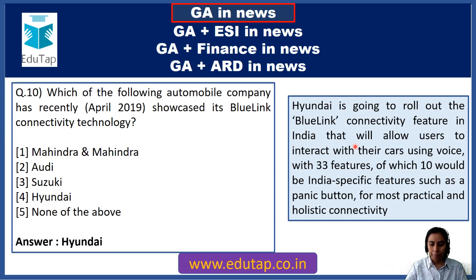Question 26: World Autism Awareness Day is celebrated on 2nd April every year. You have to identify the theme for 2019. Options are: empowering women and girls, assistive technologies and active participation towards autonomy, or autism and the 2030 Agenda — inclusion and neurodiversity. The correct theme is assistive technologies and active participation, highlighting awareness about autism through technologies.